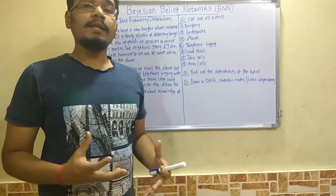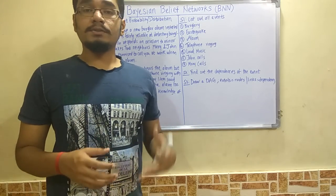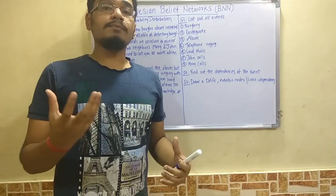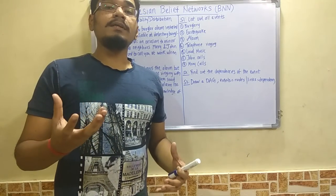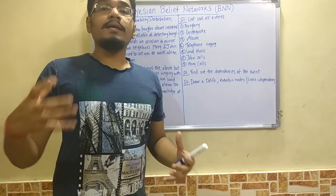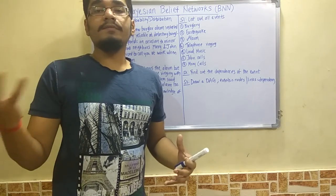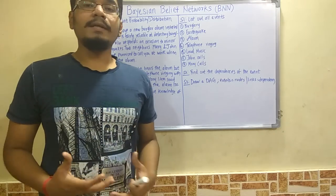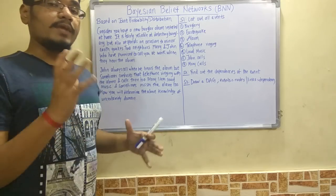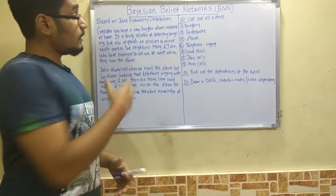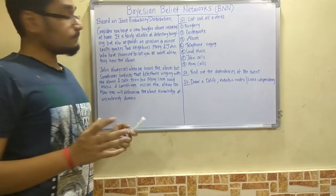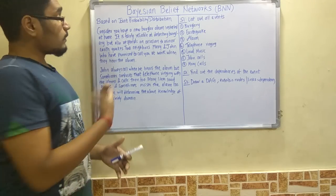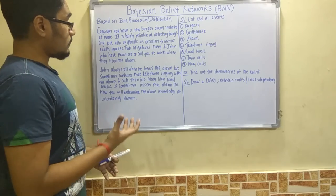BBN networks are based on the joint probability distribution of mathematics, specifically on conditional probability — if one event occurs given that a prior event has already occurred. This is called causality, and BBNs operate on the causality principle. As our example, consider a new burglar alarm installed at your home: it is fairly reliable at detecting burglary but also responds on certain occasions to minor earthquakes.